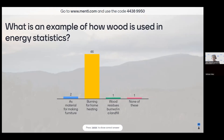Thank you for all the answers — I really like to see so many of you participating. The correct answer is indeed burning for home heating. It is clearly an energy purpose that we can report in the residential sector of final consumption. Furniture is non-energy use. Wood residues burned in a landfill — from what is written, you can't deduce that the energy generated is used somehow; the material could be burned just to reduce its volume, leaving only ash. And none of these is not correct either.